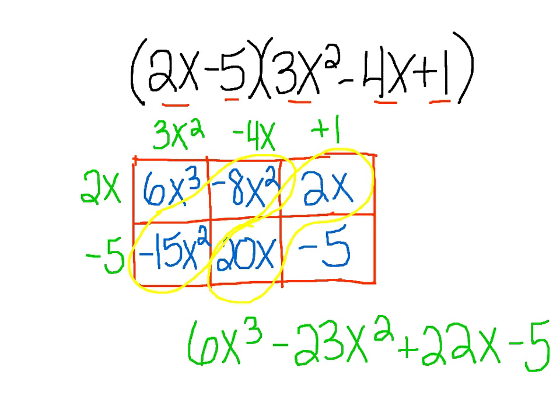To review: we've learned how to multiply binomials using the distributive property, the box method, and FOIL. In this lesson we talked about how to multiply polynomials, but we only use the distributive property and the box method — because as we learned, FOIL only works when we're multiplying two binomials together.